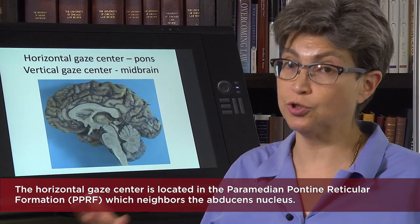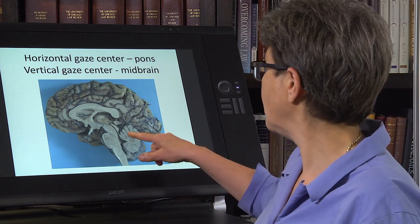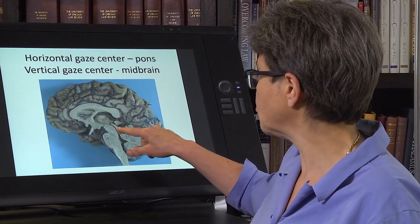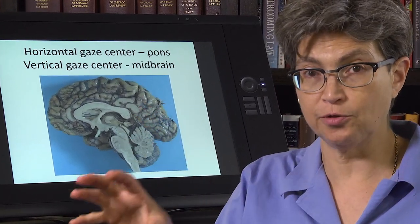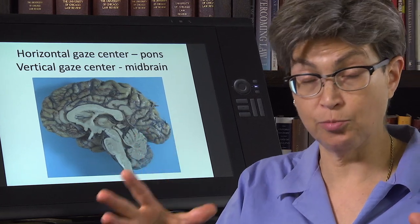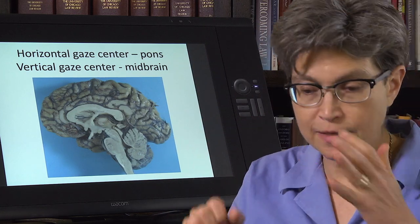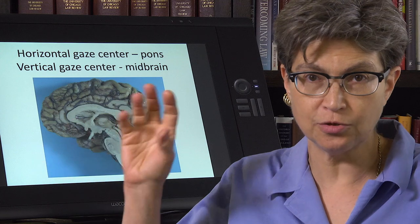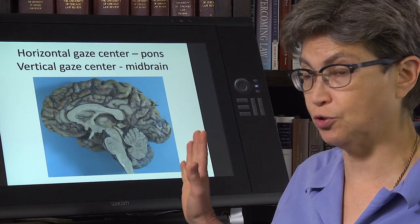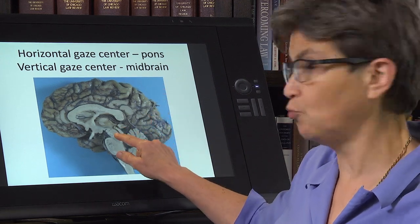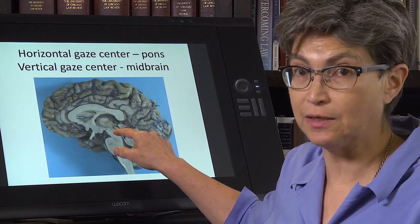Vertical eye movements and torsional eye movements — torsional eye movements we will virtually completely ignore — are controlled in the midbrain in an area just outside of the oculomotor nucleus, just outside of the oculomotor complex. Remember, the complex includes both the oculomotor nucleus and Edinger-Westphal nucleus. There is a center that controls vergence and a center that controls vertical and torsional eye movements up in the midbrain.